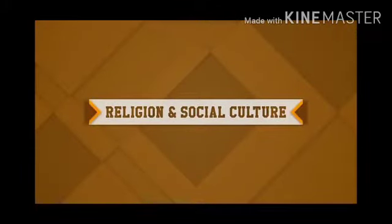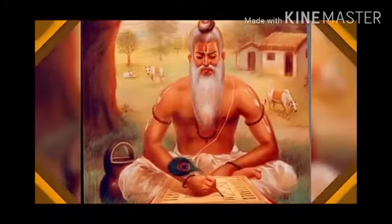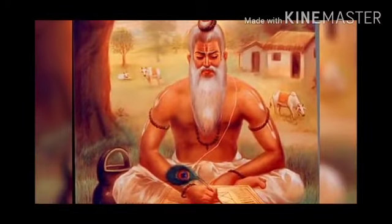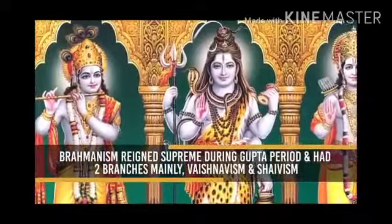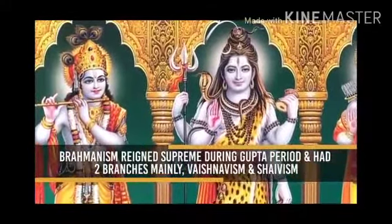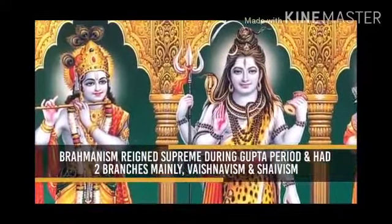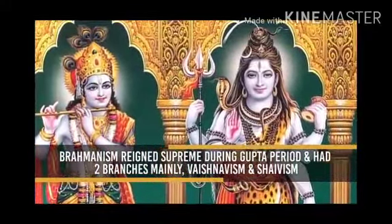Regarding religion and social culture of the Guptas, the four varnas — Brahmana, Kshatriya, Vaishya and Shudra — existed during this time. Brahmins reigned supreme during the Gupta period. Religion had two main branches: Vaishnavism and Shaivism, which were very important aspects of Gupta society.